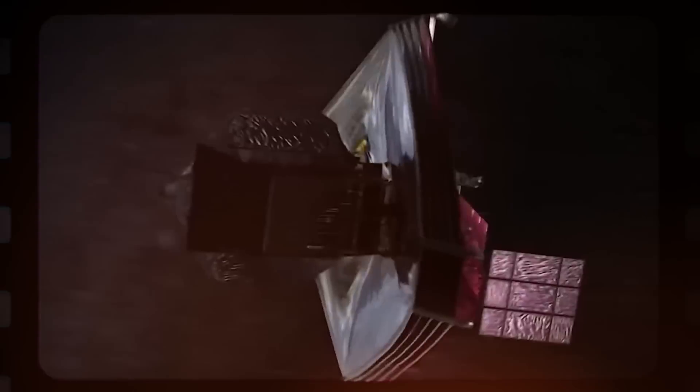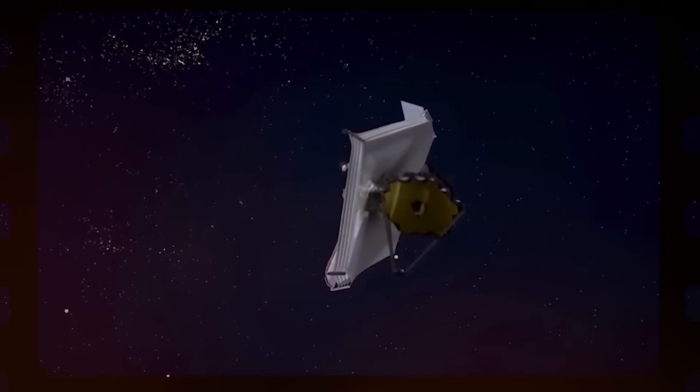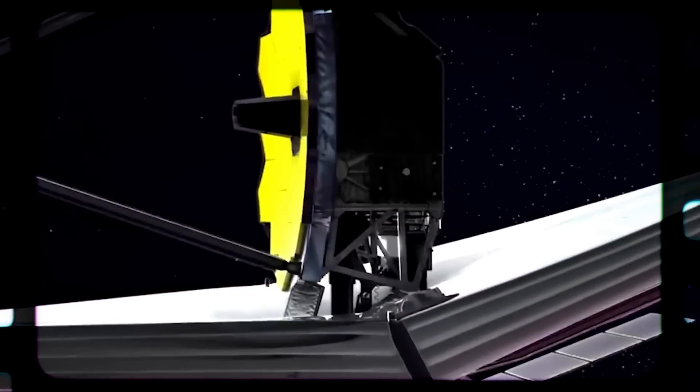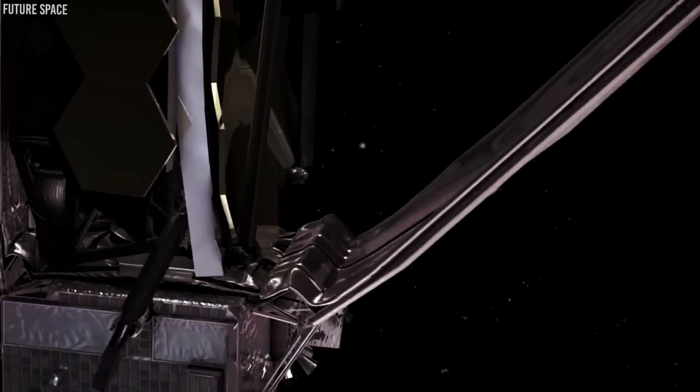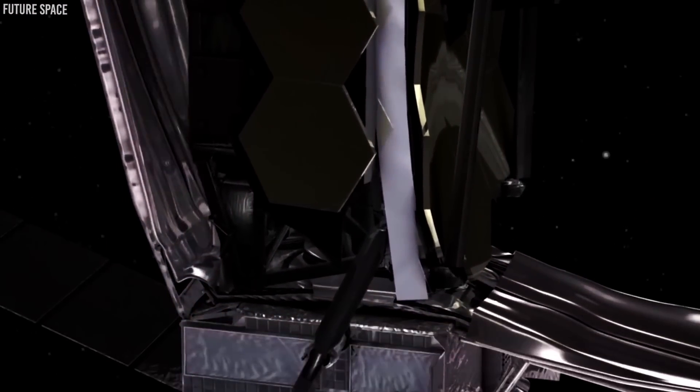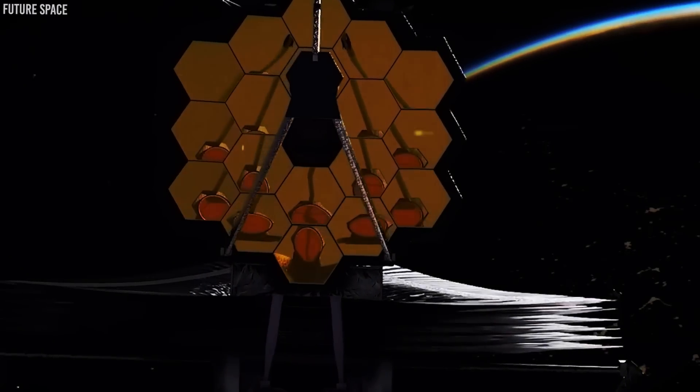But here's where the JWST's adventure gets even more captivating. Old telescopes often had a problem with the cold. Not the JWST. It thrives in the chilly vastness of space. To achieve its best performance, its instruments and mirrors need to be kept at frosty temperatures. It's like they've been bundled up in cosmic winter coats.